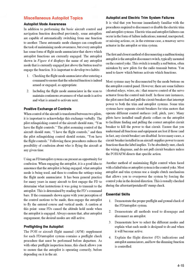Miscellaneous Autopilot Topics — Autopilot Mode Awareness. Some autopilots are capable of automatically switching from one function to another. Every autopilot has some form of flight mode enunciator that shows which autopilot functions are currently engaged. It is important to develop two habits: 1. Checking the flight mode enunciator after entering a command to ensure that the selected function is indeed armed or engaged, as appropriate. 2. Including the flight mode enunciator in the scan to maintain continuous awareness of what mode is active and what is armed to activate next.